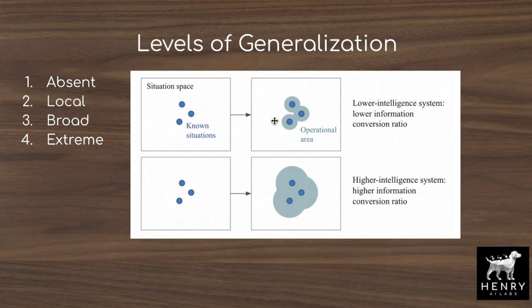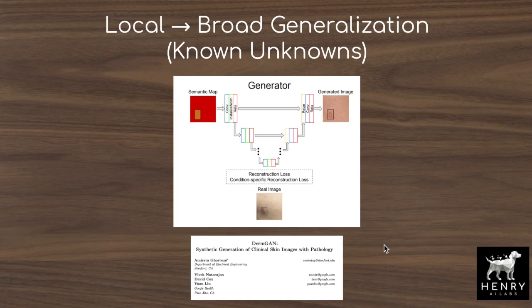Local to broad is like: once you solve the local generalization problem, the benchmark shifts and people no longer view it as impressive. This diagram depicts it well — with golden retrievers and other dogs, local generalization means viewing a golden retriever from a different angle or action pose, while broader generalization means introducing a new dog breed. Extreme generalization is where the system can generalize to situations that we aren't even aware of as developers. DermGAN shows how machine learning algorithms can improve at known-unknown generalization, blurring the line from local to broad.